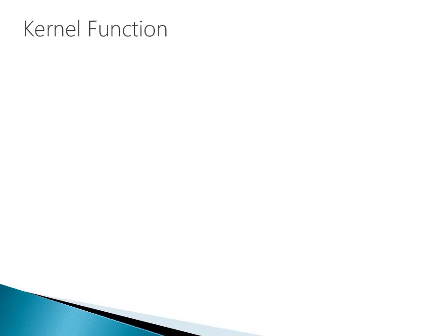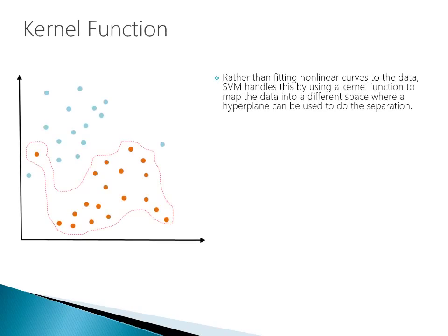Now let's jump into the topic of the kernel function. The kernel function is a trickier idea to understand, but once you understand the basic mechanics, you'll find it's an incredibly powerful tool that allows for some really complex analysis. Rather than fitting non-linear curves to the data, a Support Vector Machine handles this by using the kernel function to map the data into a different space where a linear hyperplane can be used to do the separation.